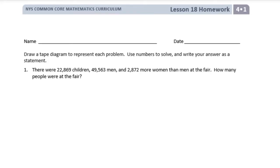Number one. There were 22,869 children, 49,563 men, and 2,872 more women than men at the fair. How many people were at the fair?